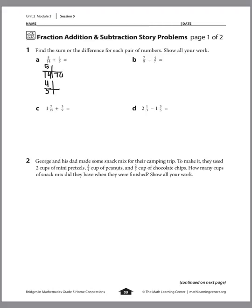We think: what did I multiply 14 by to get to 70? I multiplied by 5, so I'm going to do the same to the top: 5 times 5 is 25. And to get to 70 from 5, I'm multiplying by 14, so I do the same to the top: 4 times 14. I know 4 times 4 is 16, so that would be 56. Our new problem is 25/70 plus 56/70.